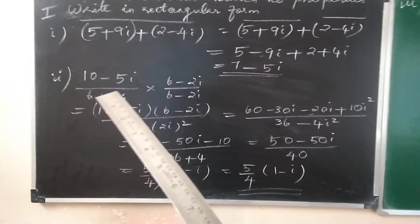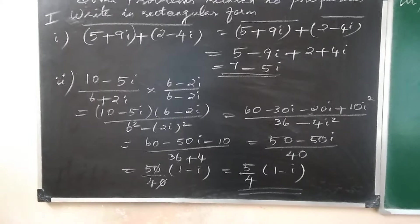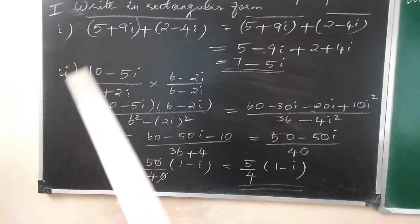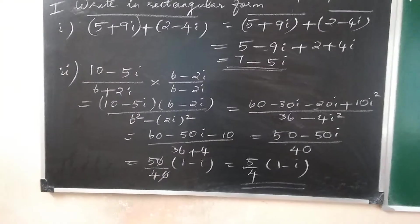The second one is 10 minus 5i by 6 plus 2i. We are supposed to write the standard form or rectangular form of this complex number.